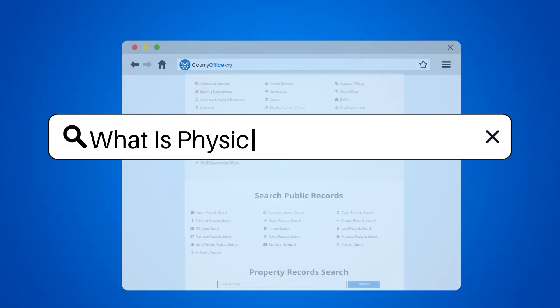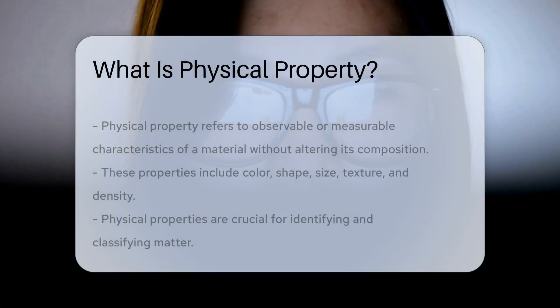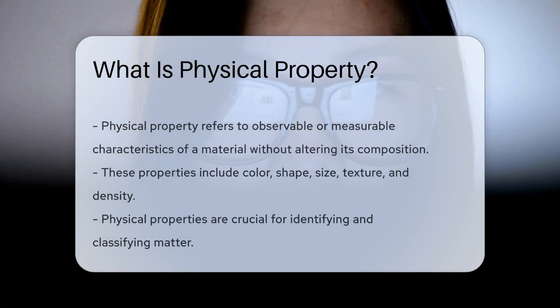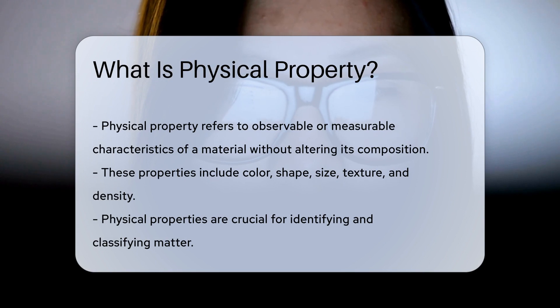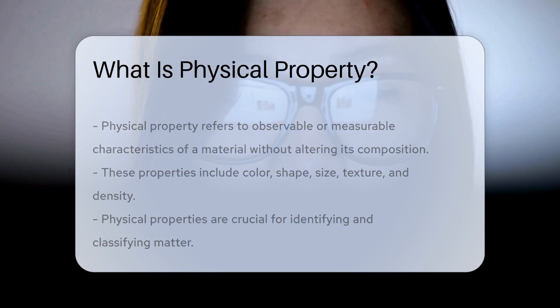What is physical property? Physical property refers to the characteristics of a material that can be observed or measured without changing the substance's composition. These properties include color, shape, size, texture, and density.